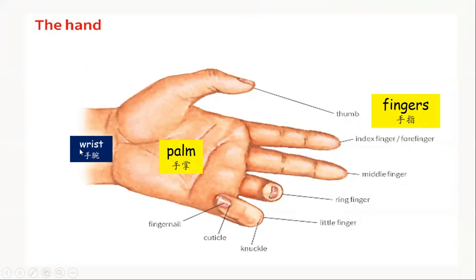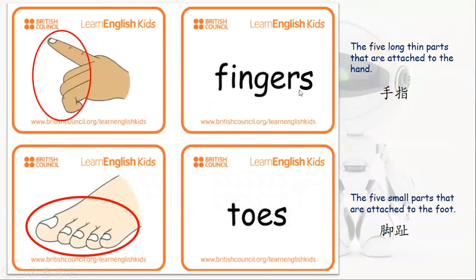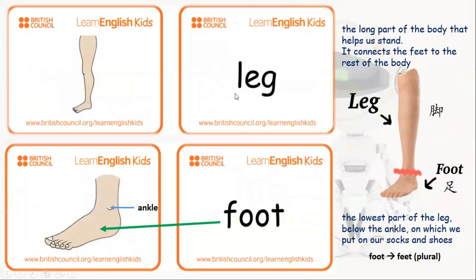那这个部分叫做手腕 — Wrist. Fingers. Fingers are the five long thin parts that are attached to the hand. 手指。Toes. Toes are the five small parts that are attached to the foot. 脚趾。